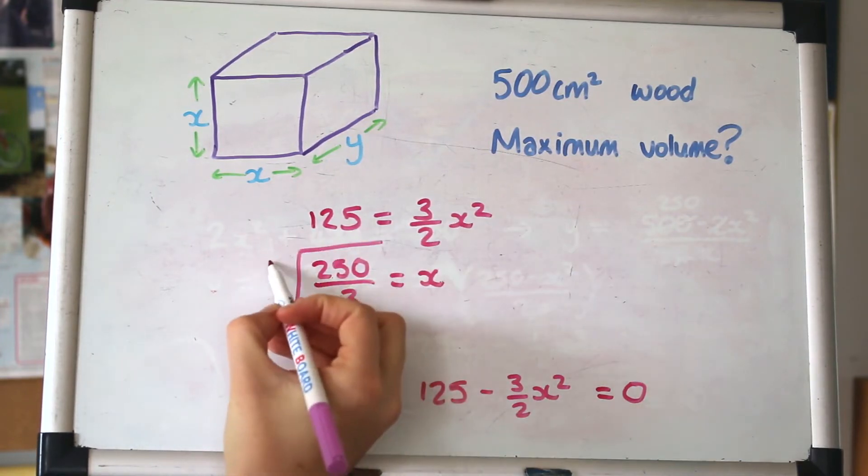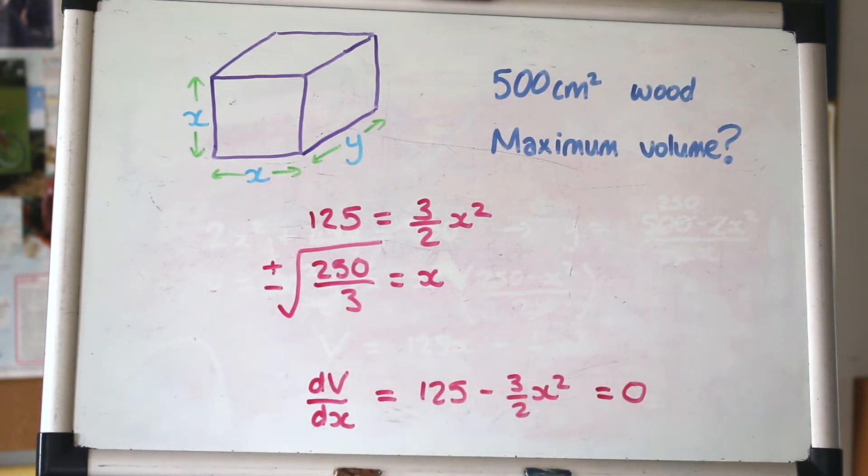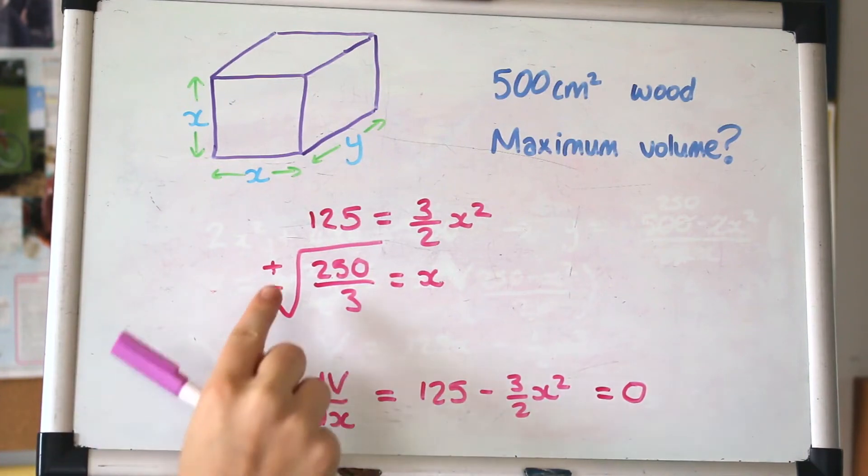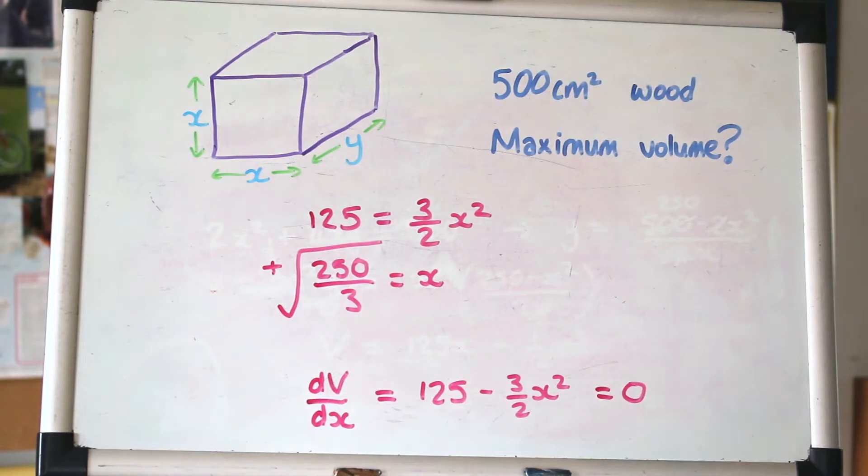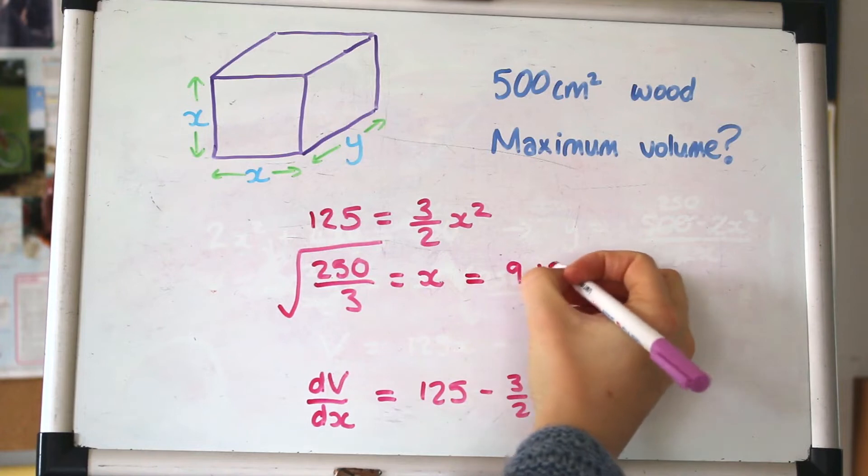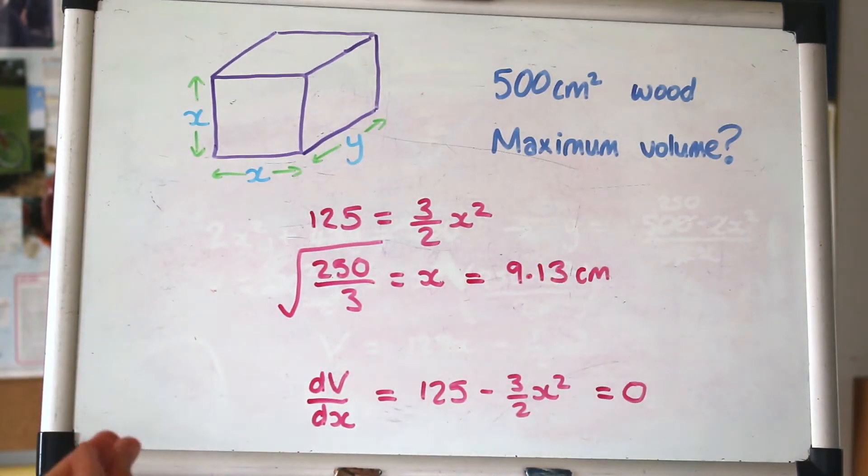This is a quadratic, a negative quadratic, so it has that kind of shape. That knowledge alone is enough to know we're finding a maximum. When the gradient is zero, it's a maximum. Setting dV/dx equal to zero and solving, we get x = ∛(250) = 9.13 cm. Because we're looking at lengths, it makes no sense to have a negative length, so we only consider the positive root.